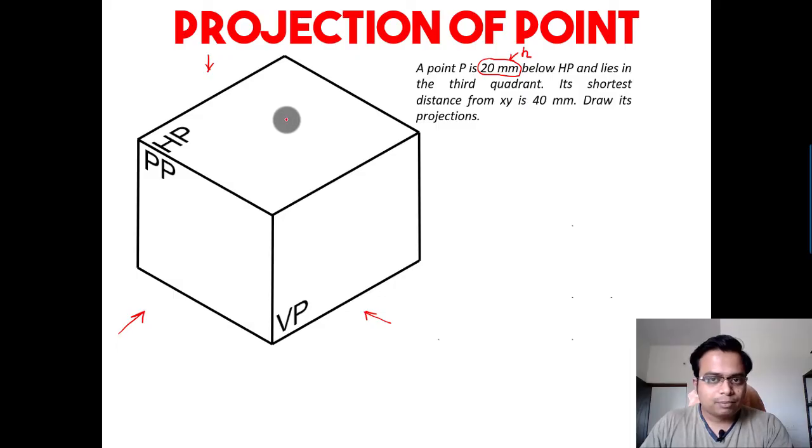So let's put in a point which is precisely 20 millimeters below this horizontal plane, something of this sort. This is 20 millimeters below the HP, and the name of the point is point P. That's 20 done.